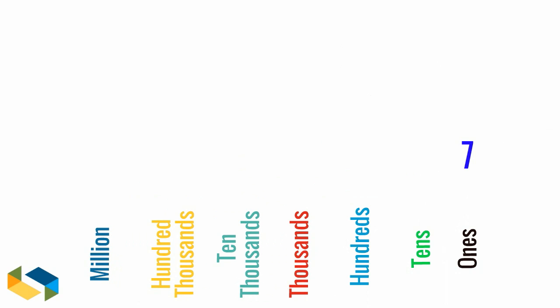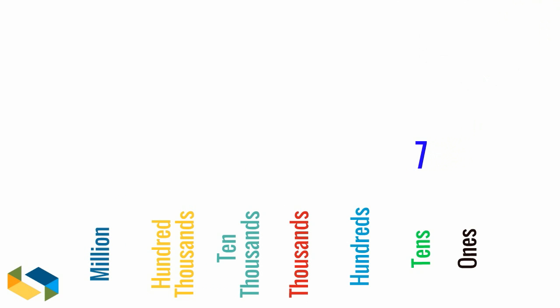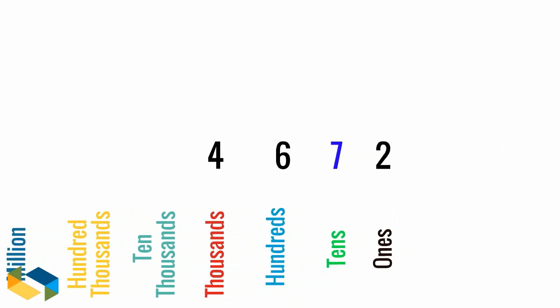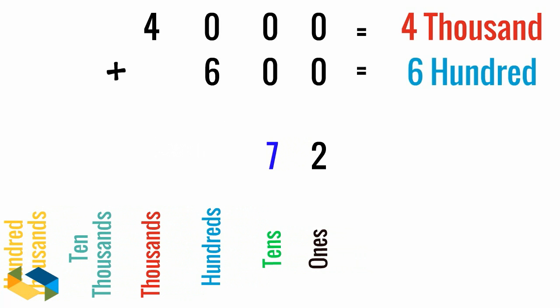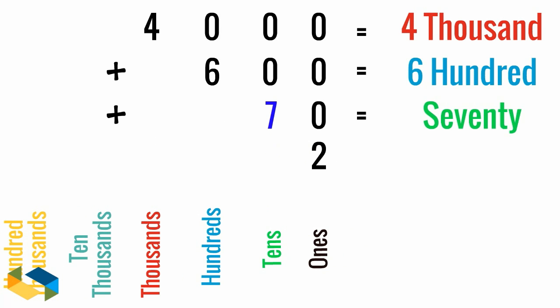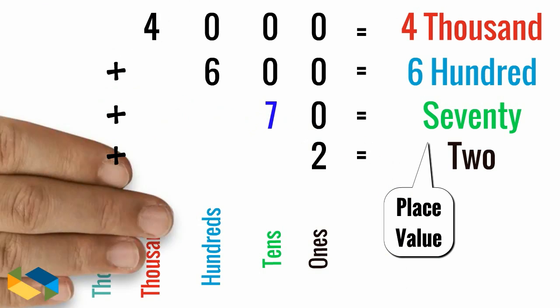Let's take a numeral seven. As a single digit its value is well of course seven, this is its face value. When we place this seven in a larger number say 4672, its value is determined by the place it is at. In this case 70. This is called its place value.